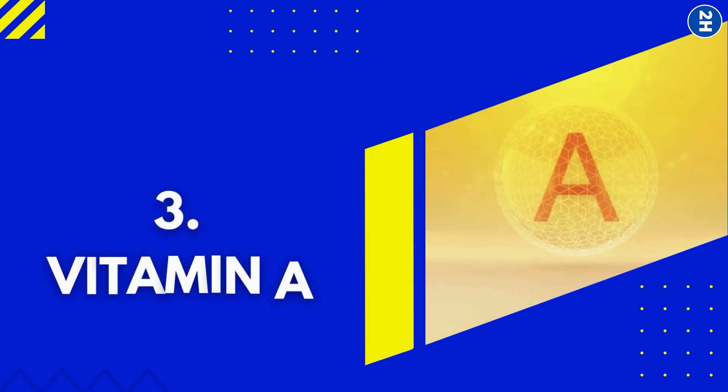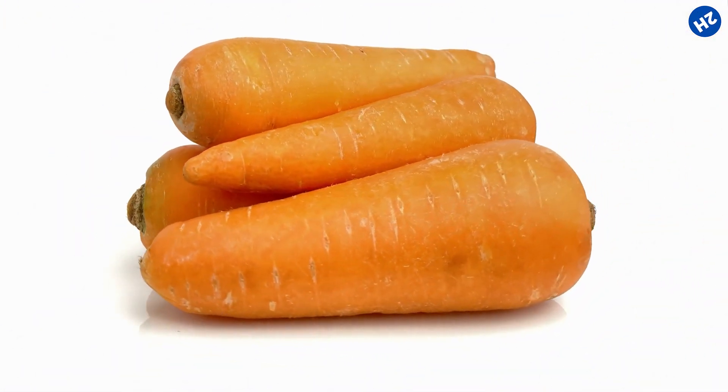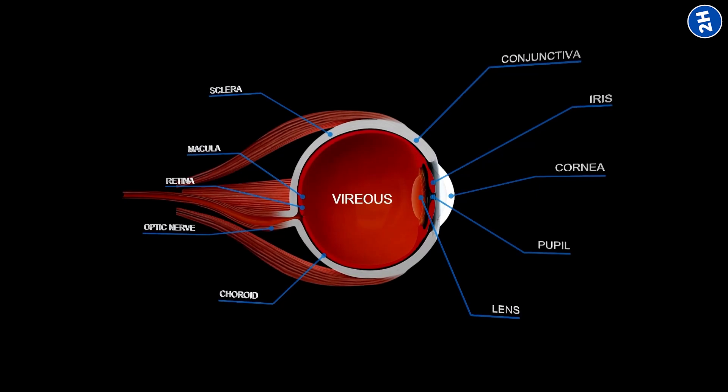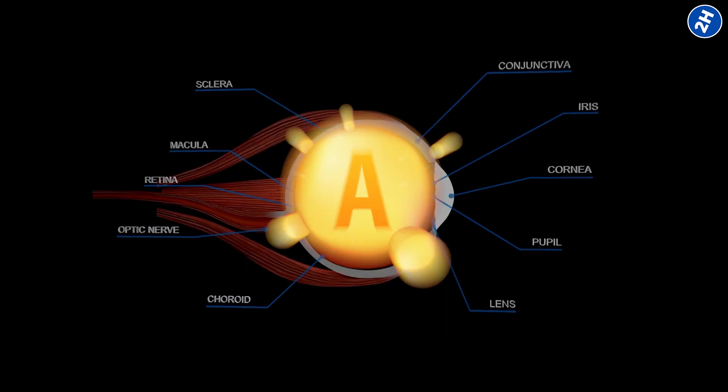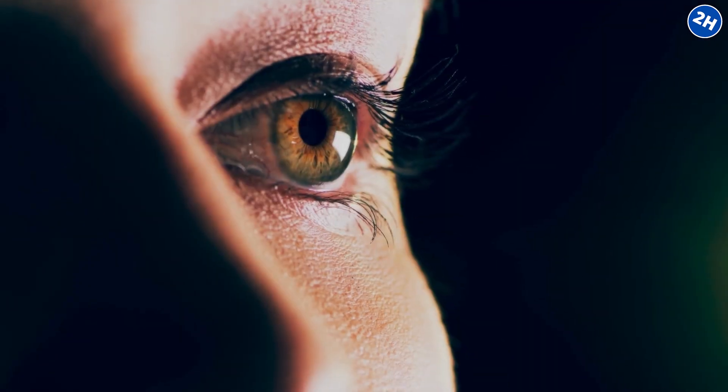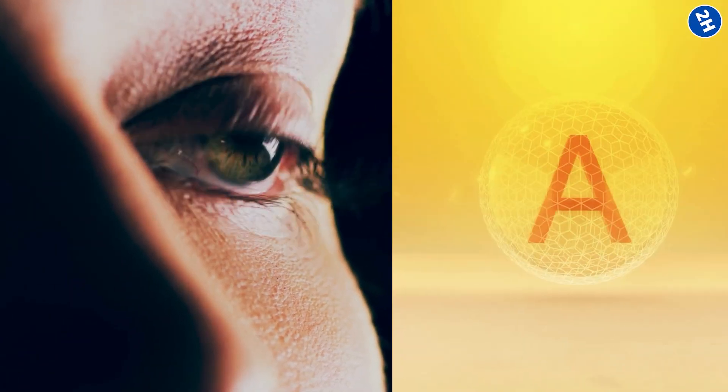Number 3. Vitamin A. We've all heard that carrots are healthy for the eyes, but do you know why? That's because they contain significant levels of vitamin A. Both the retina and the cornea of the eye need vitamin A. It helps in the pigment production necessary for your retina to work properly. You can have problems seeing in low light if you don't get enough vitamin A.